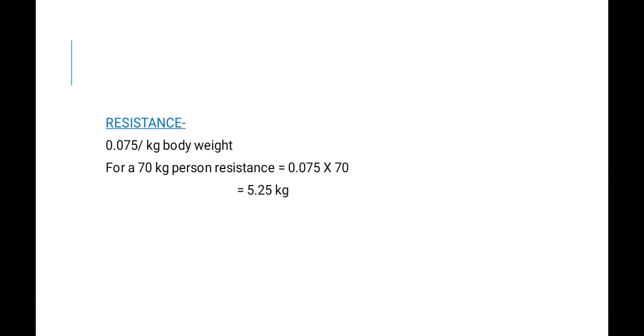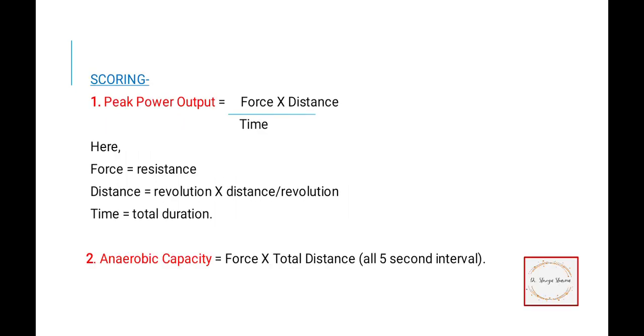An electrical machine continuously records flywheel revolution in 5-second intervals. Normally, resistance is 0.075 per kg body weight. So if it's a 70 kg individual, the resistance is 5.25 kg. For scoring, peak power output is force times distance upon time. Force is the resistance we have set, distance is revolution times distance per revolution, and time is total duration. Anaerobic capacity is force times total distance from all 5-second intervals.